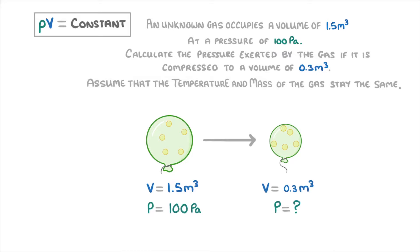So if we take our equation, PV equals constant, we can figure out the constant for the first gas sample by taking the pressure of 100 Pa and multiplying it by the volume of 1.5 meters cubed, which gives us a constant of 150.